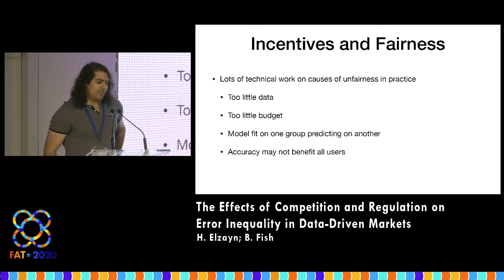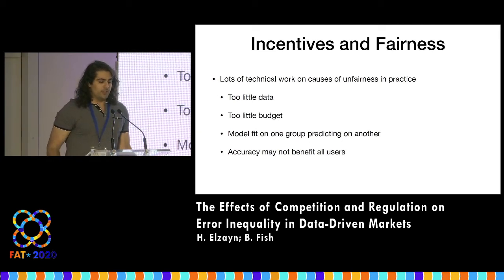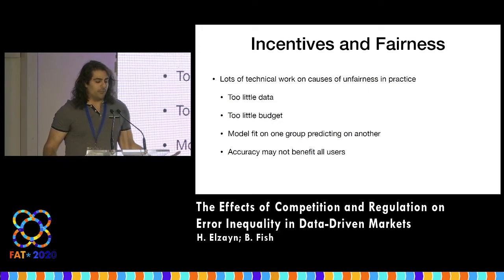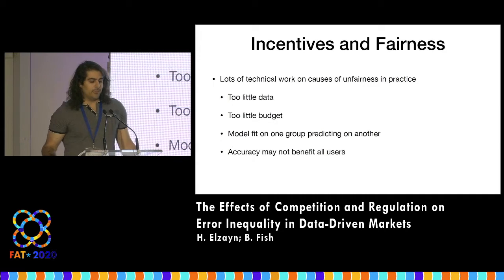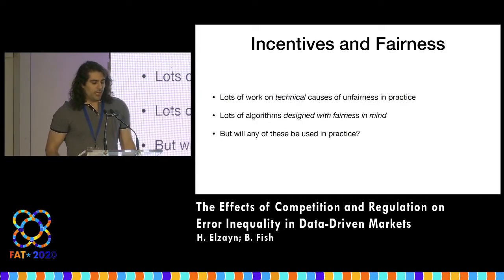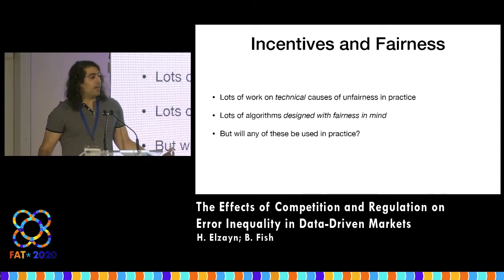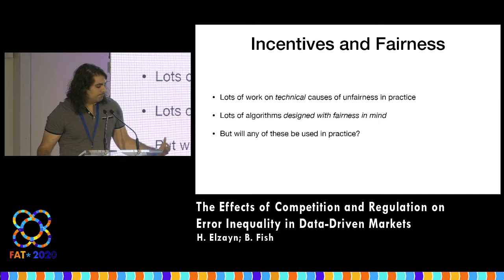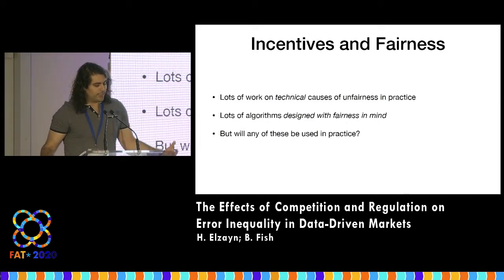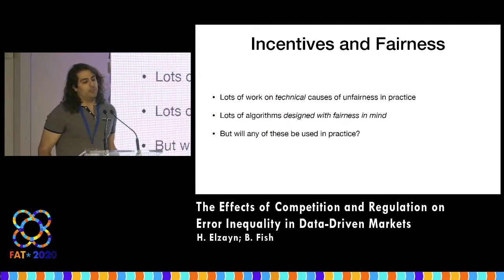There's a lot of technical work on the causes of unfairness that you can see in practice — things like too little data, fitting a model on one group and then predicting on another, or not having enough budget to buy data. There's also a lot of work on designing better algorithms or introducing processes to counteract these issues ex post or with pre-processing. But the question we study is: will any of these be used in practice?